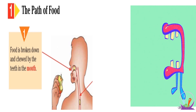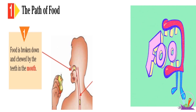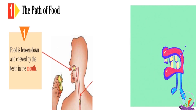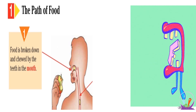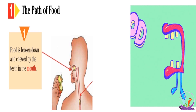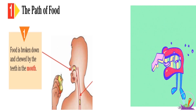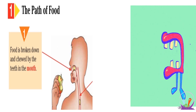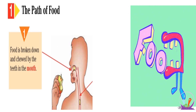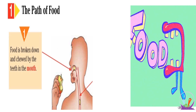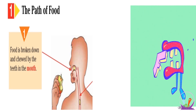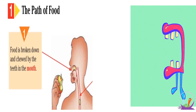In the first part, which is the mouth — what happens to the food in the mouth? The food is broken down and chewed by the teeth in the mouth.